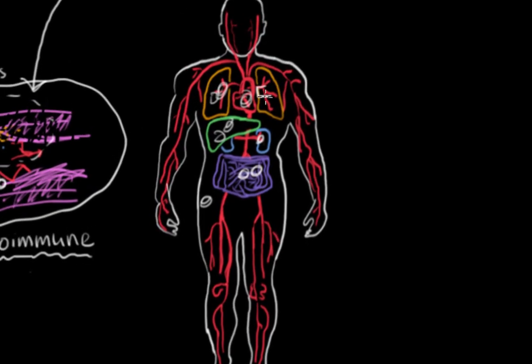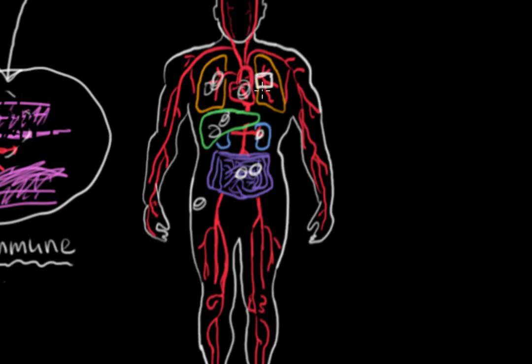So for example, one type of vasculitis might affect the lungs and the kidneys only. Another type might affect the intestines, the kidney, the heart, and the lungs. And still another type might only affect the big blood vessels that come out of the heart.